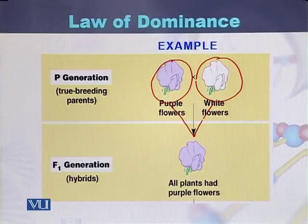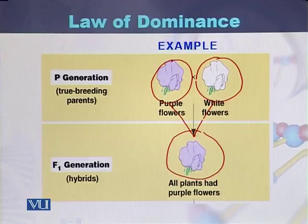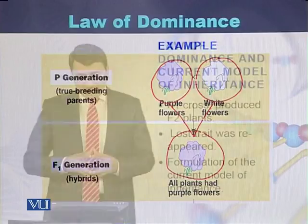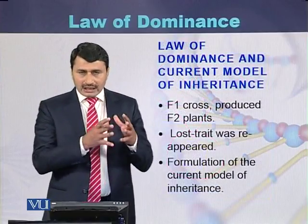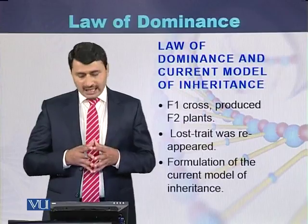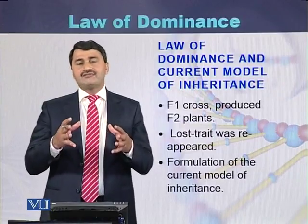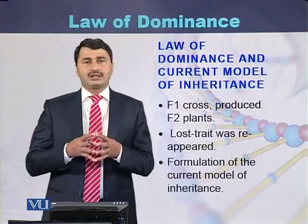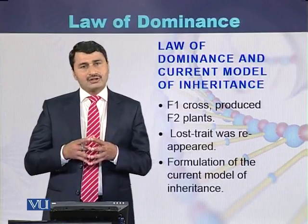When F1 generation was produced, all plants were producing purple color flowers. Comparing the law of dominance with the current model of inheritance: when plants produced as a result of the F1 cross were interbred with each other, the F2 generation of plants was obtained.